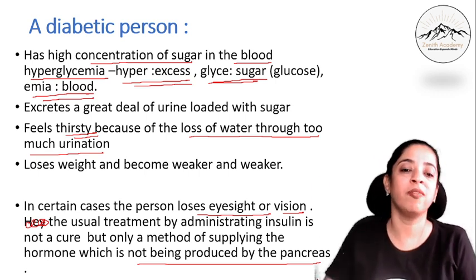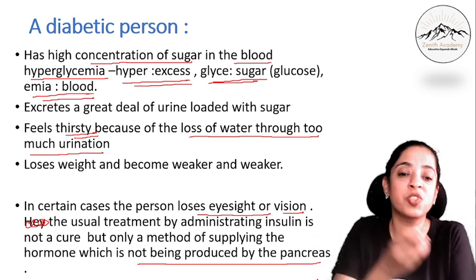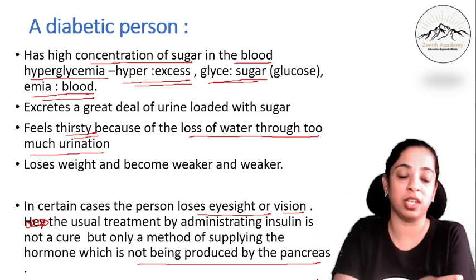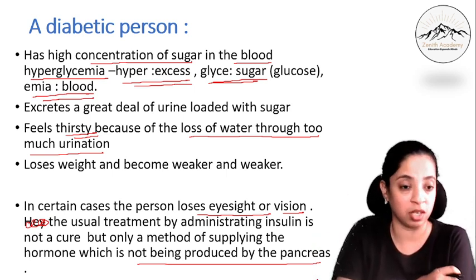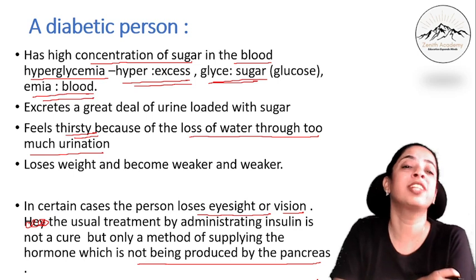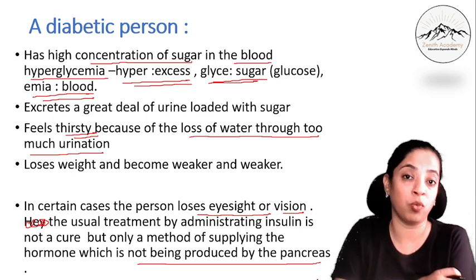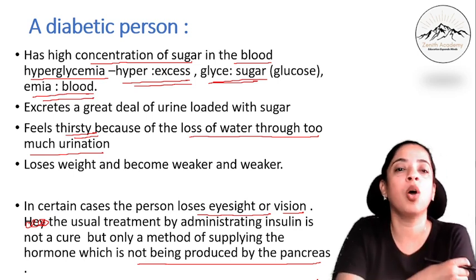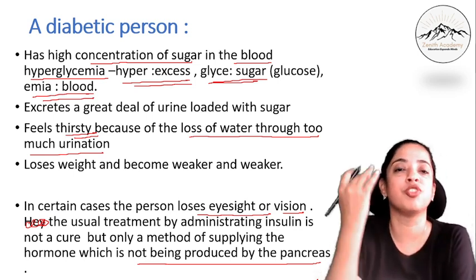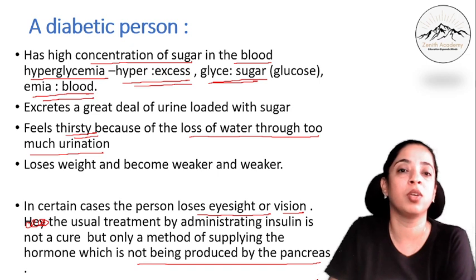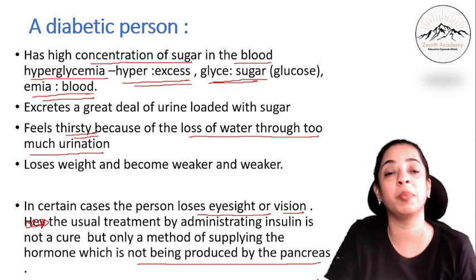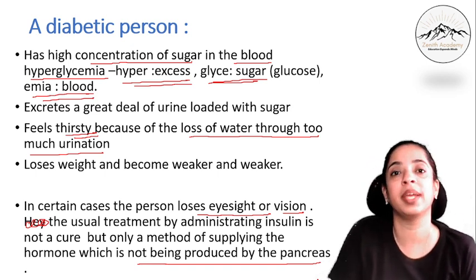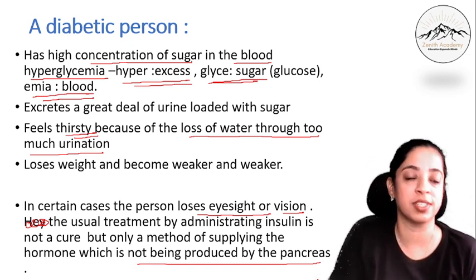When we administer insulin into the body of a diabetic person, we are not actually curing it. What we are doing is supplying the hormone which the pancreas is not able to supply in good quantities.